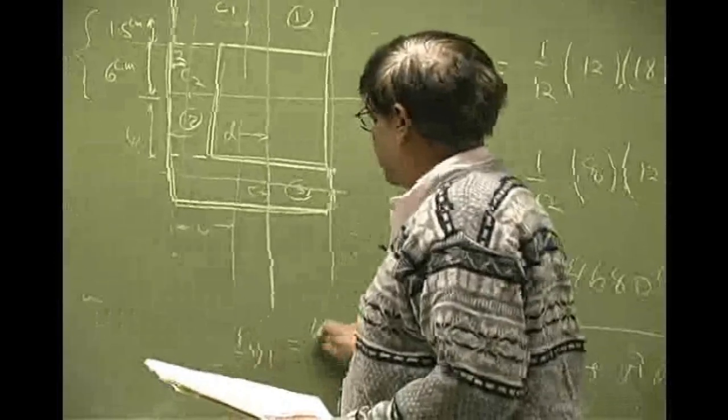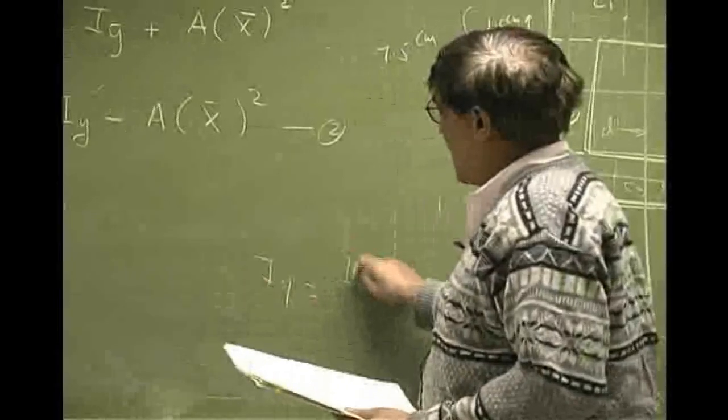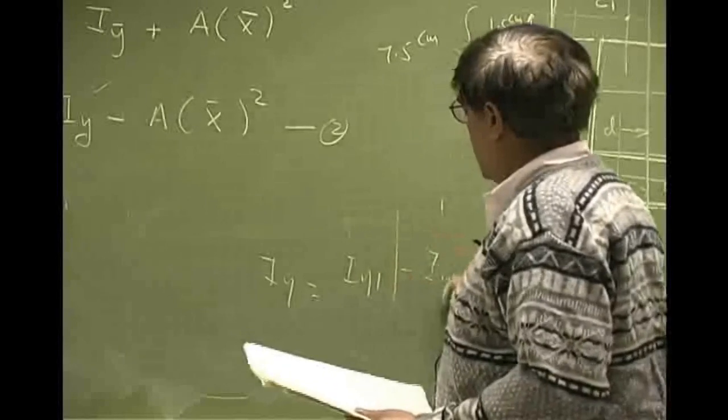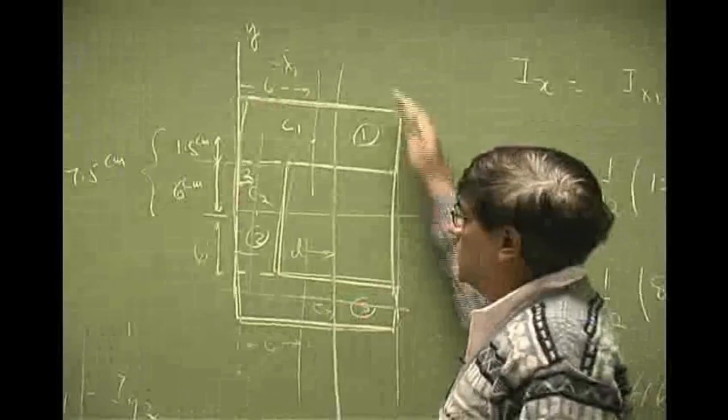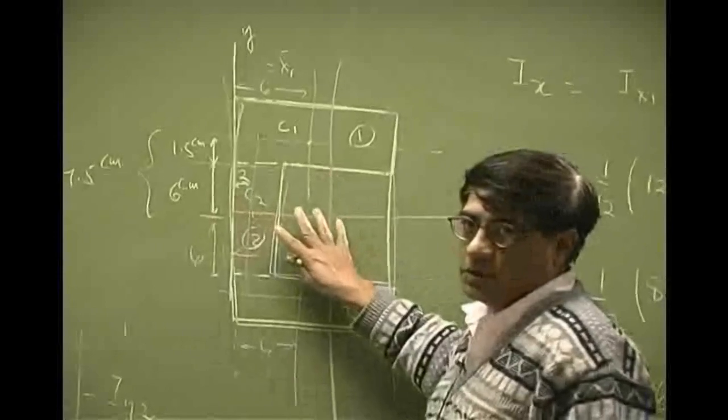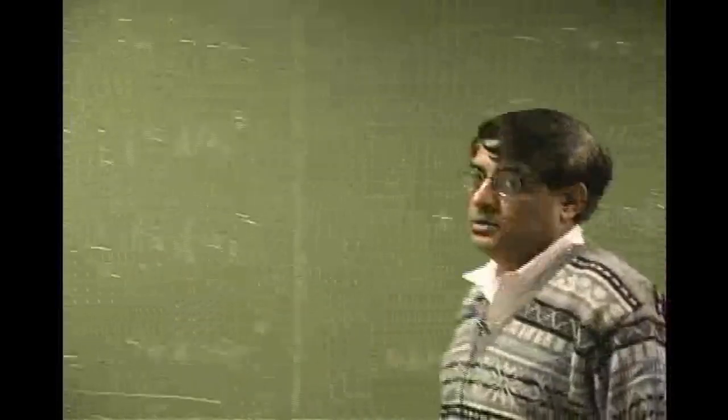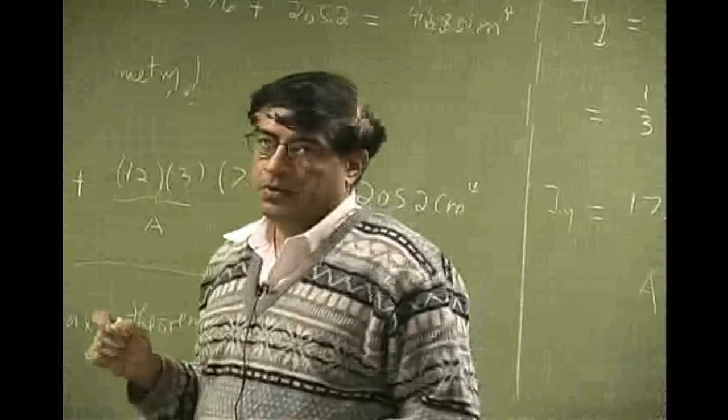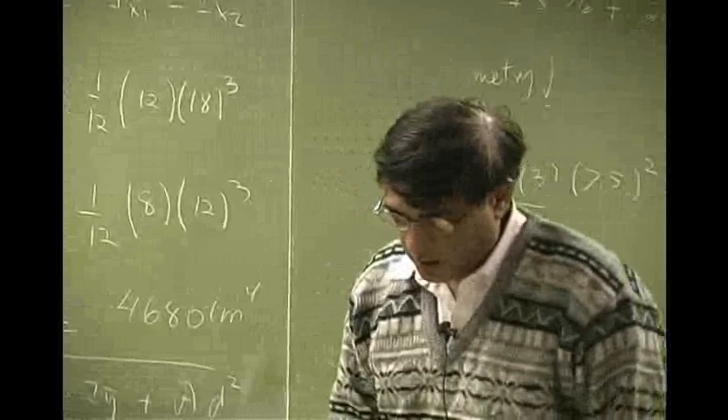And so that's your Iy2. Iy1 is just bh³ over 3. So Iy would become Iy1 minus Iy2. You can use the formula, which means you take this, subtract this. That's not a problem. It's just that this is not the same reference point, so you have to go through a step where you use that equation to find the inertia about the y-axis. Okay, your problem set.